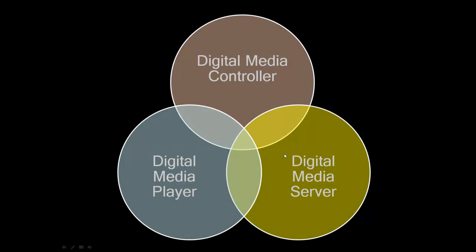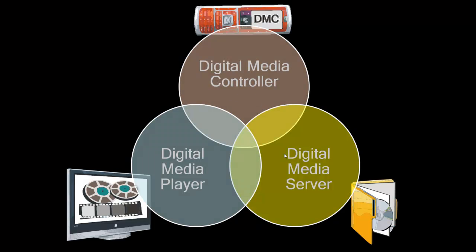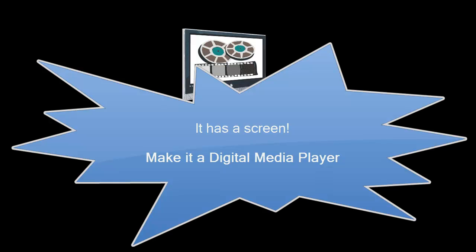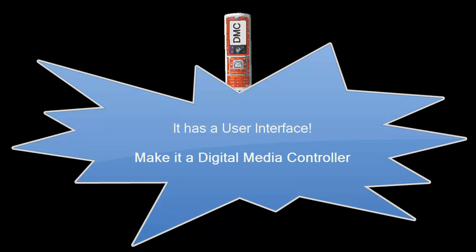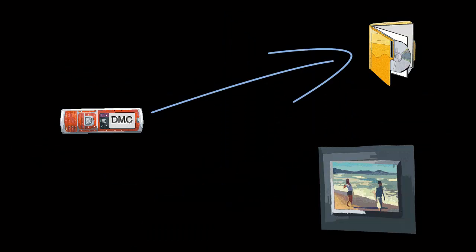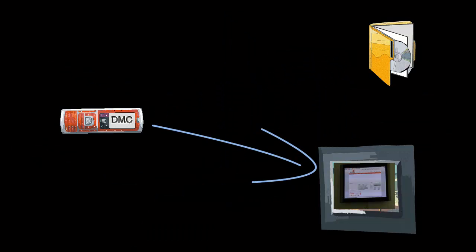When a device manufacturer adds DLNA to their product, they should consider which of the three modules make sense for their specific product design. If the device has a screen and hardware powerful enough to support videos, it would benefit from having the Digital Media Player. If the device has storage where multimedia is saved, it should support the Digital Media Server. And if the device has a user interface, it should also have the Digital Media Controller functionality, so it can act as the remote control for the other DLNA devices in the network.